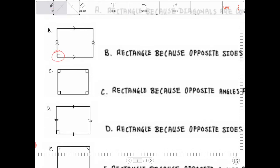C is also a rectangle, because all opposite angles are congruent, and in a parallelogram, opposite angles are congruent. And if we have at least one right angle, then therefore this is a rectangle. So this is indeed a rectangle because opposite angles are congruent and we have right angles.